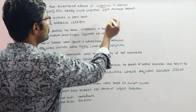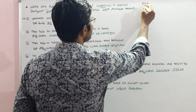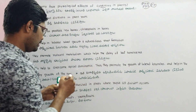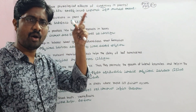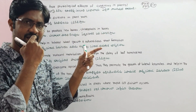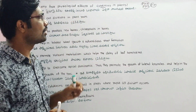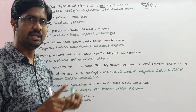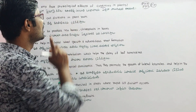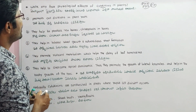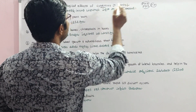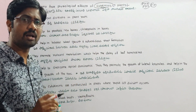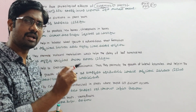The specific topic we are covering is cytokinins — plant growth hormones or plant growth regulators, also known as phytohormones. The key exam question is: write any 4 physiological effects of cytokinins in plants. We are going to define phytohormones and cover the first hormone.